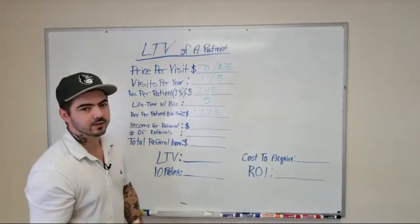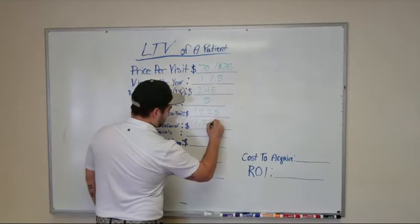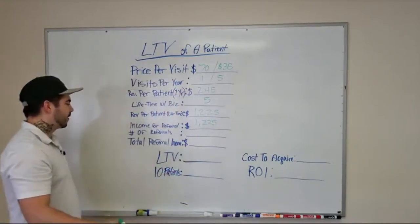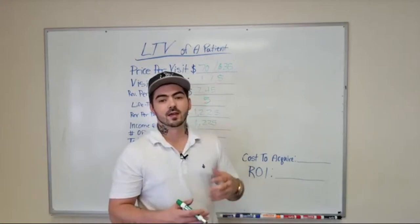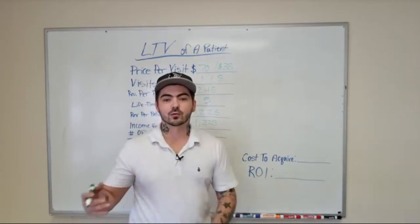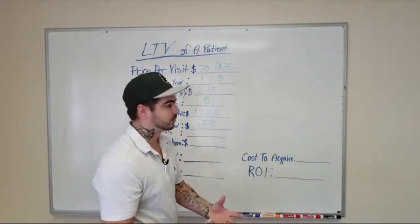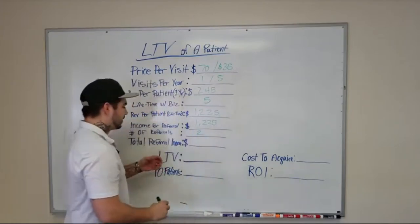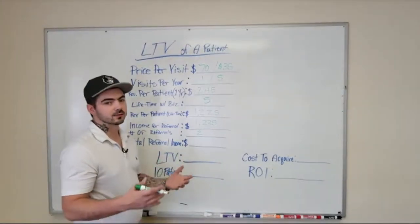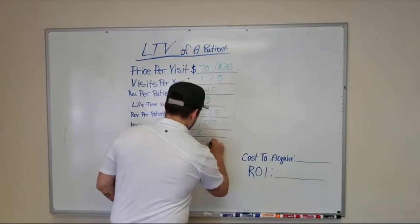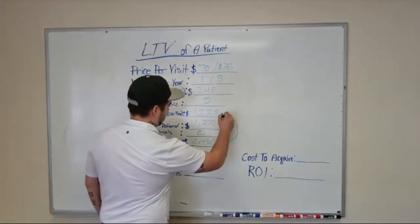So over a five-year period I'm worth $1,225 to this practice. Now for income from referrals: every single person I refer into this business is also going to be worth $1,225. On average, every one person who has a good experience at a business will refer two people — but if they have a bad experience they'll tell twelve. So with two referrals, total income from referrals is $1,225 times two, which equals $2,450.